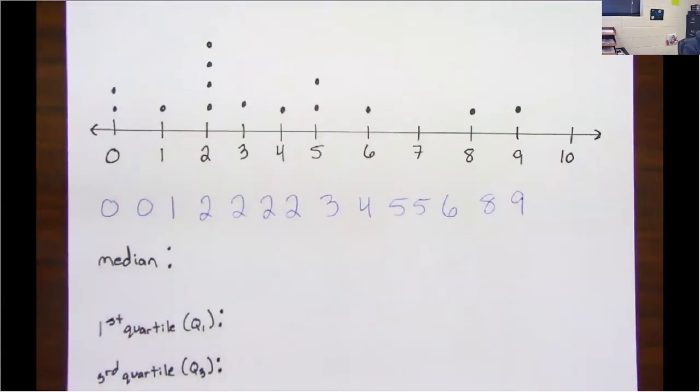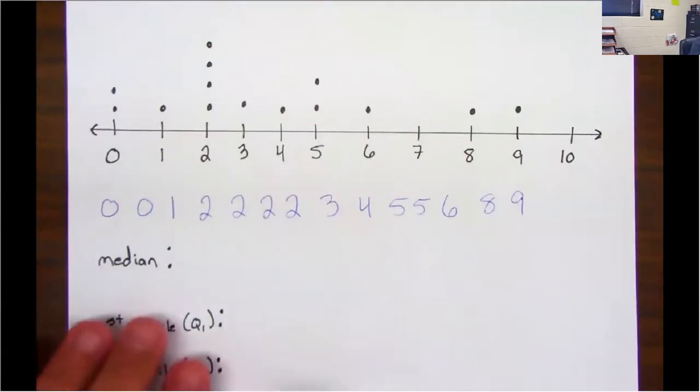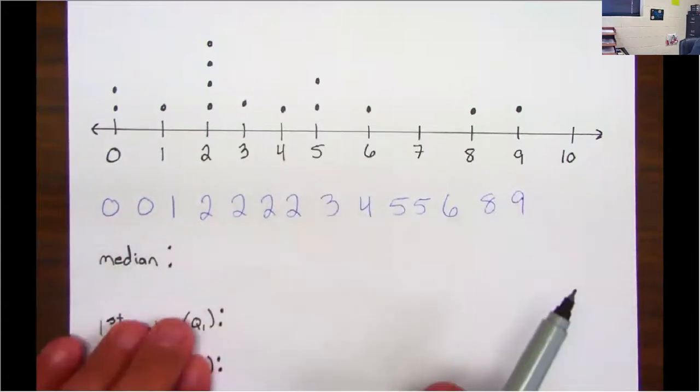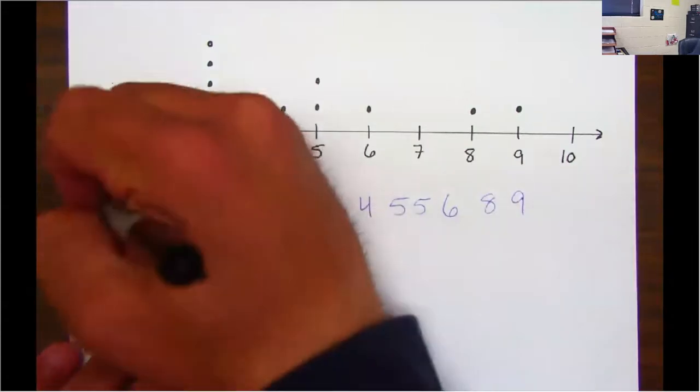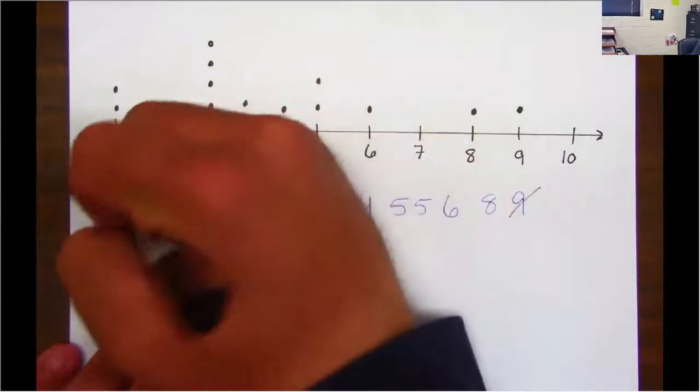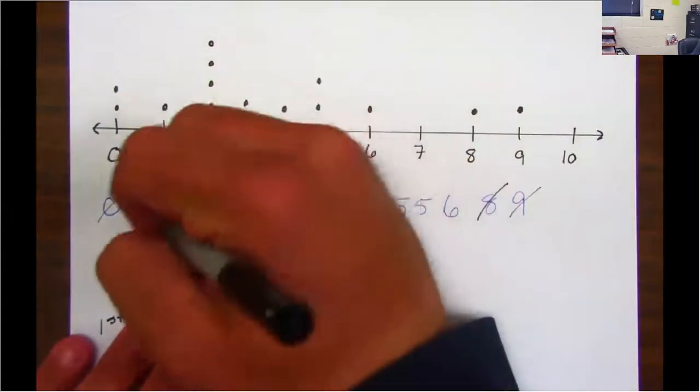Now the first question says what is the median. Well guys, once the numbers are in order from least to greatest, you cross one off the front, one off the back, one off the front, one off the back until you get to the middle.